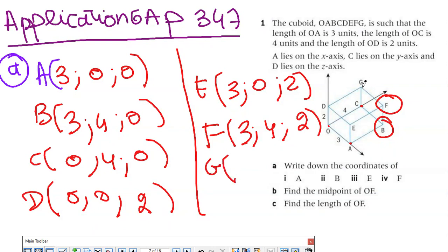I still have G. G is in which plane? It's in the plane YZ, so X is zero. Y is 4 and Z is 2. So G is (0,4,2).